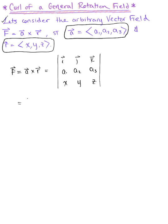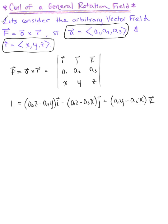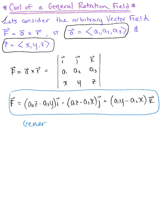Taking the determinant of this matrix leaves us with (a₂z − a₃y) times i-hat, minus (a₁z − a₃x) times j-hat, plus (a₁y − a₂x) times k-hat. This is what we call the general rotation field in three dimensions — these are its components in R³.